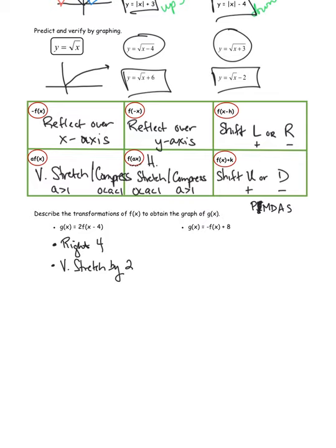For the next one, there are two things: a negative and a plus 8. Looking at order of operations — parentheses, there's nothing inside but x. Then multiplication: f(x) is being multiplied by negative 1, which makes the y's negative, so up and down switch. That is a reflection over the x-axis. And then the plus 8 at the end is attached to the y value, so it moves in the y direction — it's going to go up 8.